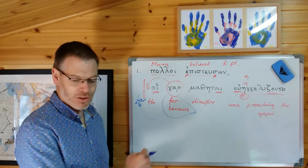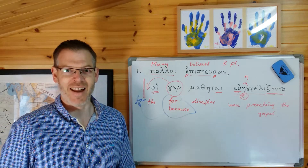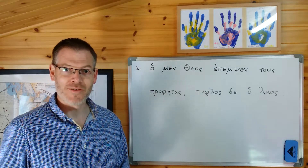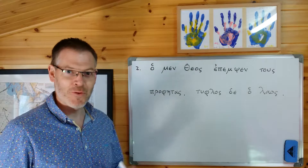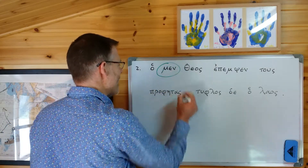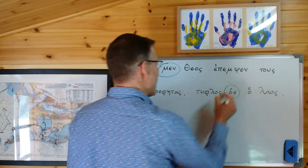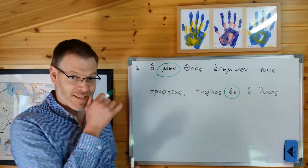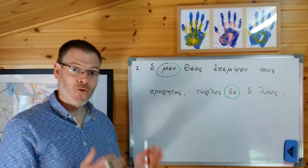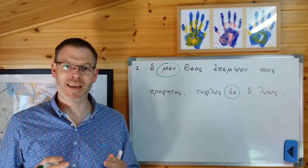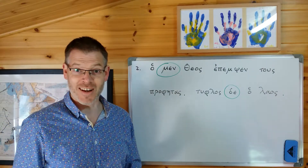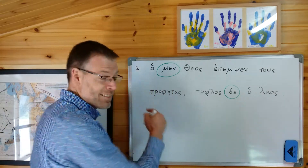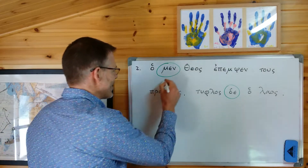Come back in a second and we'll look at men and de next. Here's a second example. We're going to think about these two little post-positive words, men and de. Before we even go about translating this sentence, you can already see that they fall into the same category of conjunctions as gar - they are post-positive. Notice they appear second in their respective clauses: men, de.